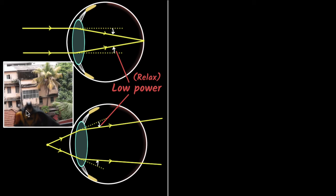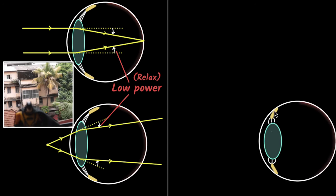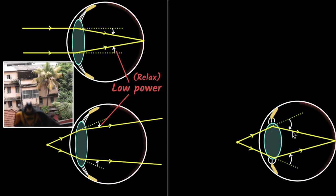So how can we focus things that are close by? We need to have more bending power — we need to increase the power of your lens. How? Your ciliary muscles can contract. They push and make your lens more spherical. By contracting the ciliary muscles, they make your lens more spherical, and that's how your power increases. Because the bending power has increased, you will now be able to focus things that are close by.